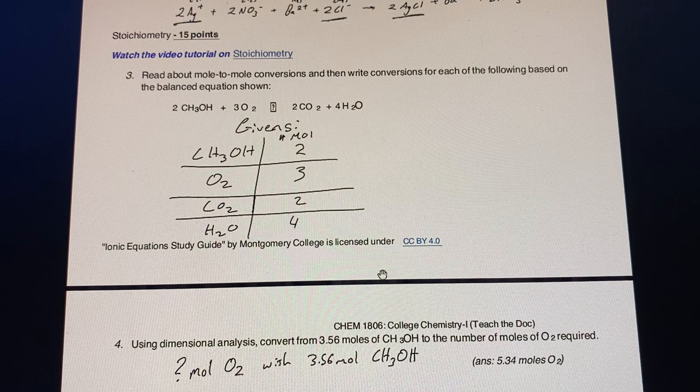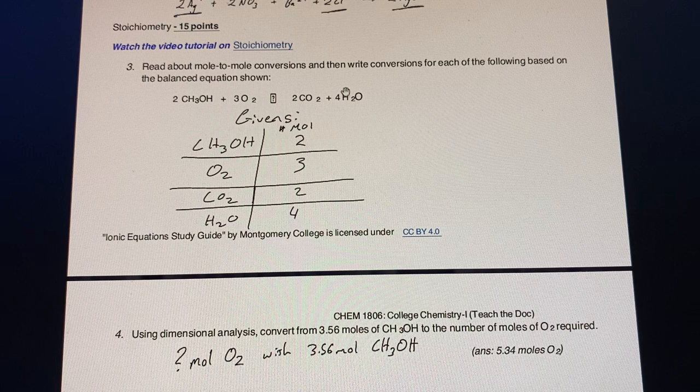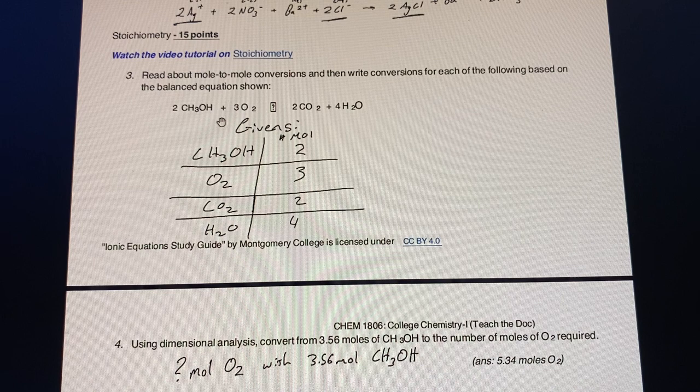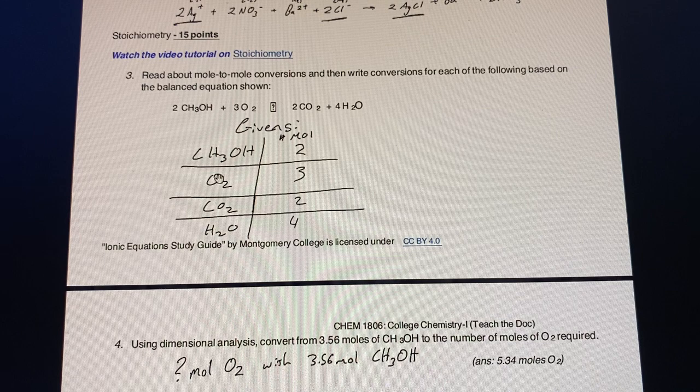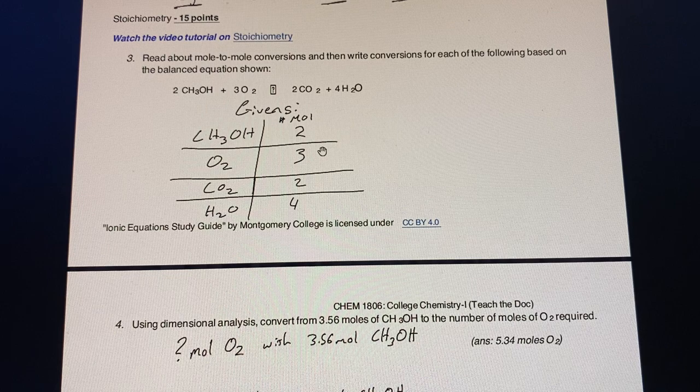And for question 3, we go into more on stoichiometry. For this first one, I believe this wasn't necessarily a question, as it's more of giving us the equation here, so I just reiterated the equations of the number of moles. We have the CH3OH which is 2 moles, the O2 has 3 moles, the CO2 is 2, and the H2O is 4, which we'll use in the next two questions.